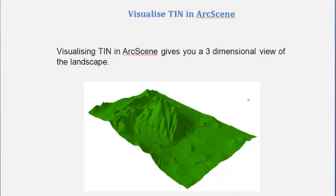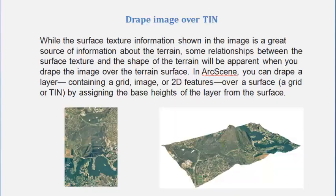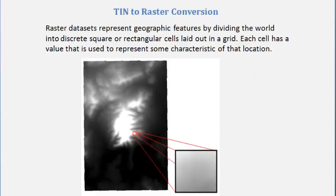From that we'll create a TIN — a Triangulated Irregular Network — and we'll visualize that in 3D using Arc Scene. We're going to drape the imagery over the top of the TIN, and in there we can actually do a fly-through.